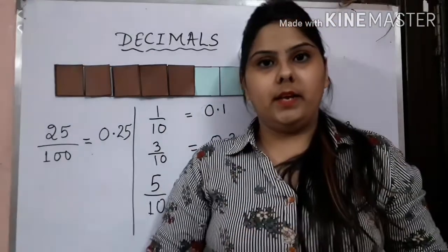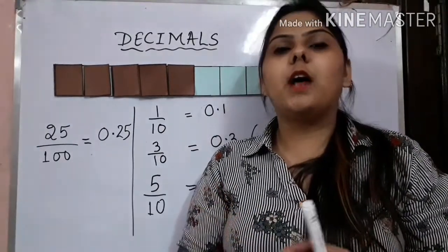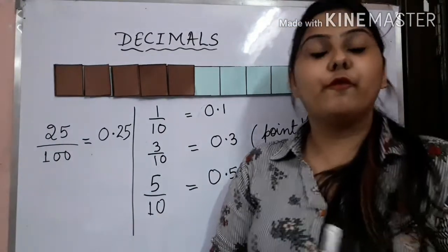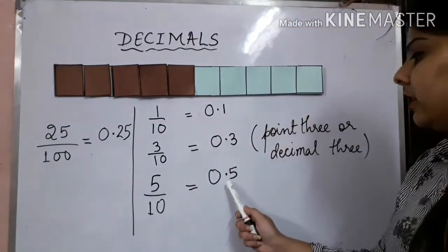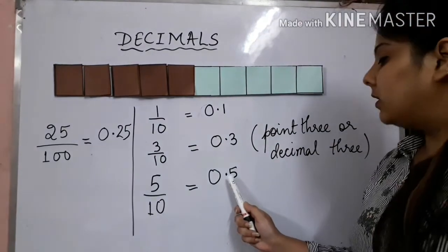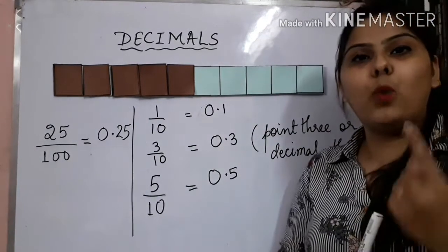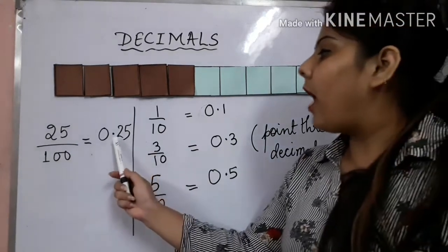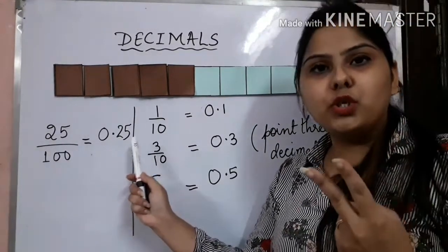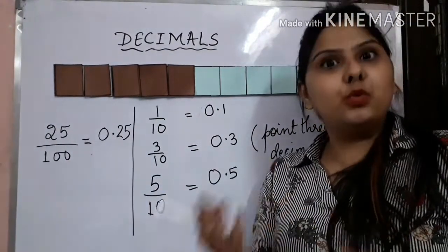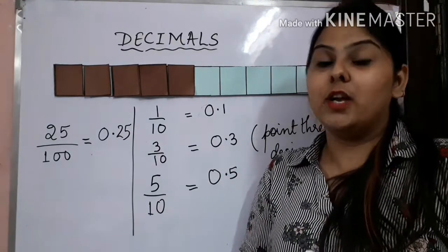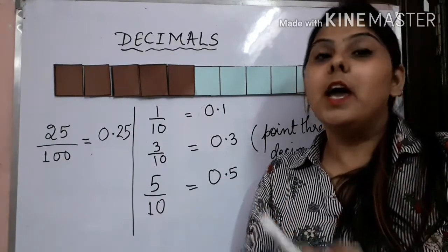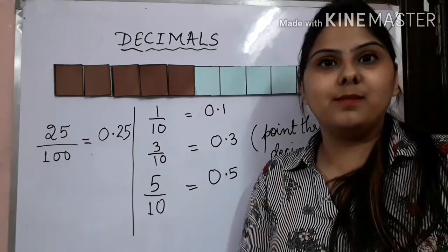Remember one thing: the number of digits after a decimal is known as decimal places. For example, if after the decimal I have 1 digit, it has 1 decimal place. If after the decimal I have 2 digits, it has 2 decimal places. If after a decimal I have 3 digits, it would be considered as 3 decimal places.